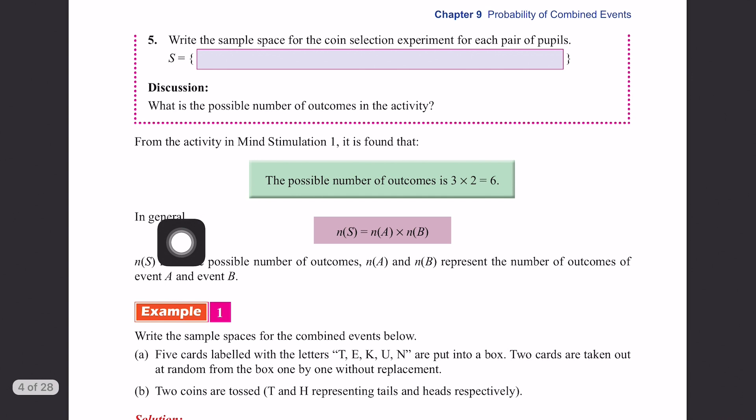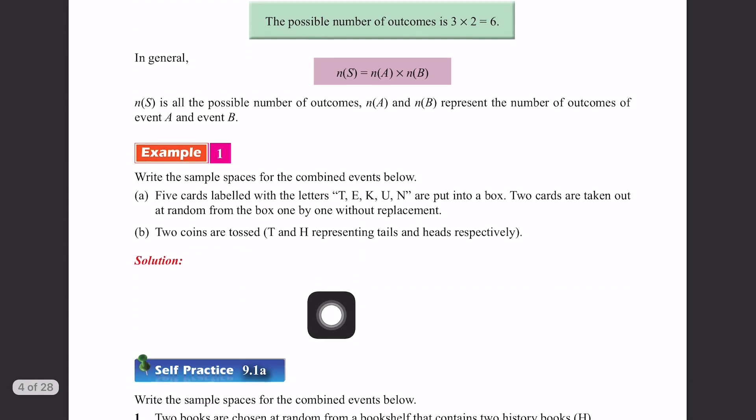The combined events are the combination of two or more events in an outcome. For example, the possible outcome for two people playing rock paper scissors. The combined events can result from one or more experiment. In general, we have this formula: n(S) equals to n(A) times n(B), where n(S) is all the possible number of outcomes, and n(A) and n(B) represent the number of outcome of event A and event B.